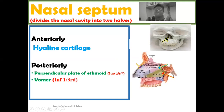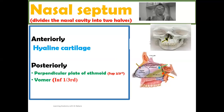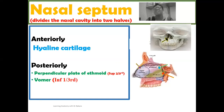So structurally, the nasal septum is made up of a cartilaginous part and also a bony part. The cartilaginous part is seen in the anterior region, while the bony part is seen in the posterior region. The bony part is made up of two bones: the superior portion is made up of the perpendicular plate of the ethmoid bone, while the inferior portion is made up of the vomer.